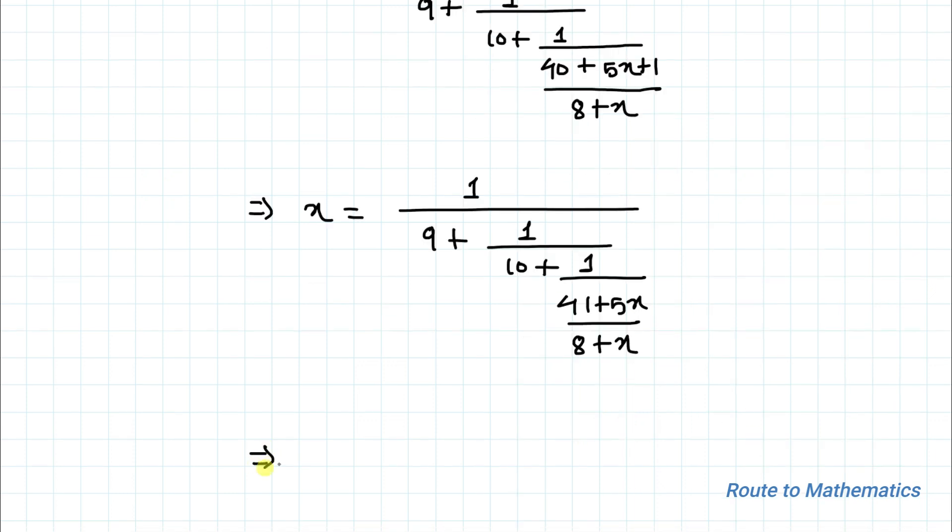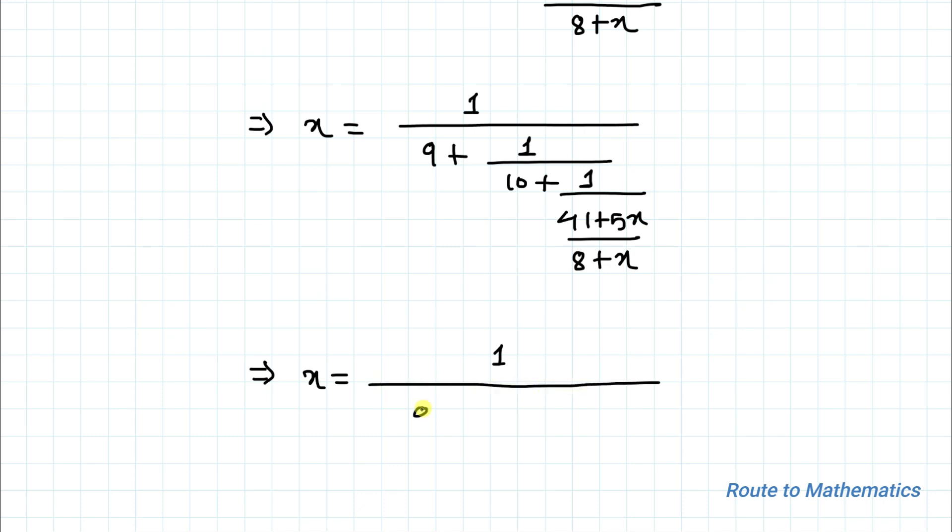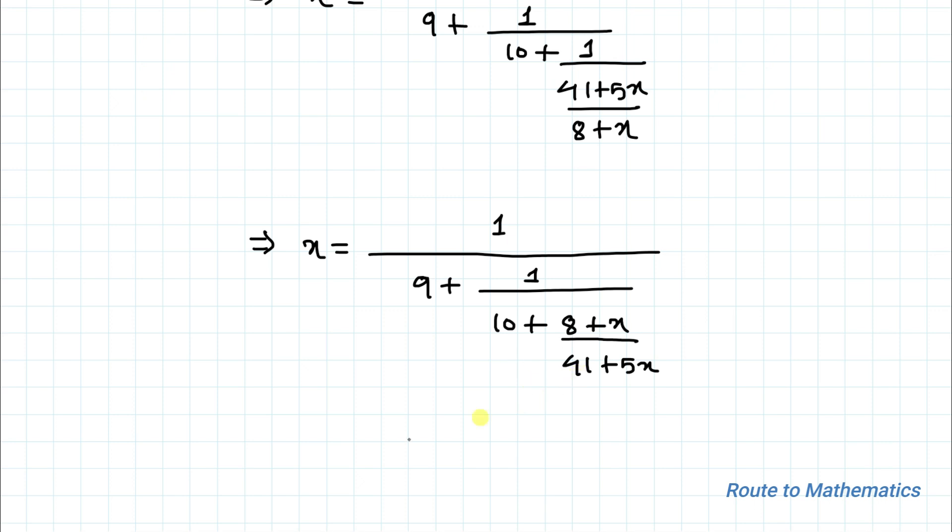This implies x equals to 1 by 9 plus 1 by 10 plus, here we have 1 by 41 plus 5x divide by 8 plus x. This can be simplified by just doing reciprocal. We have 8 plus x divide by 41 plus 5x.